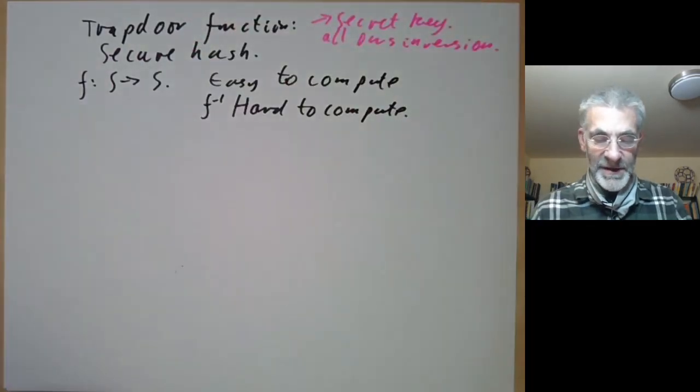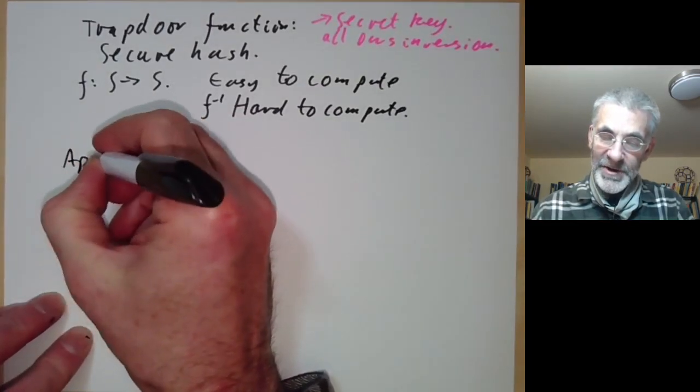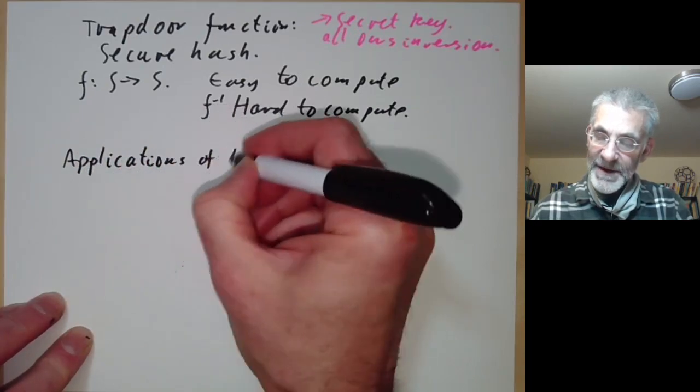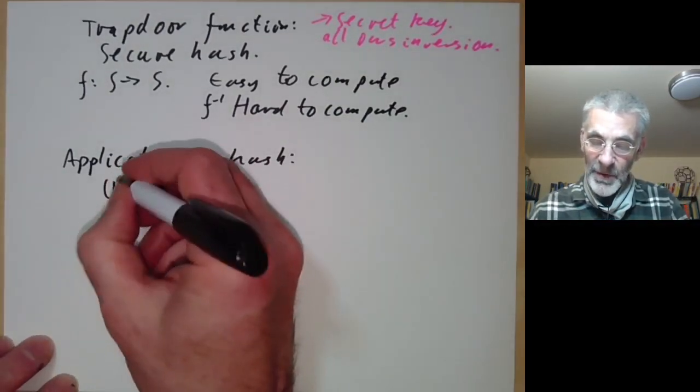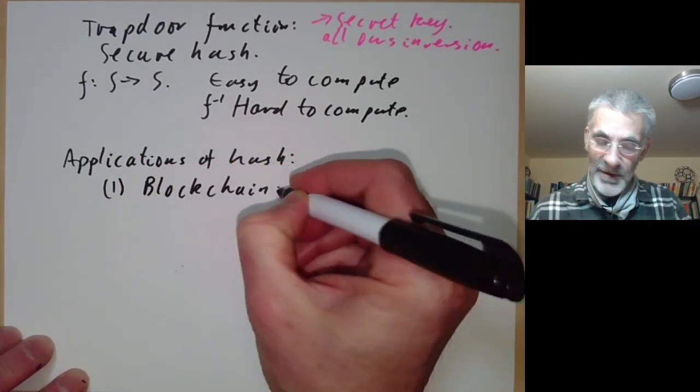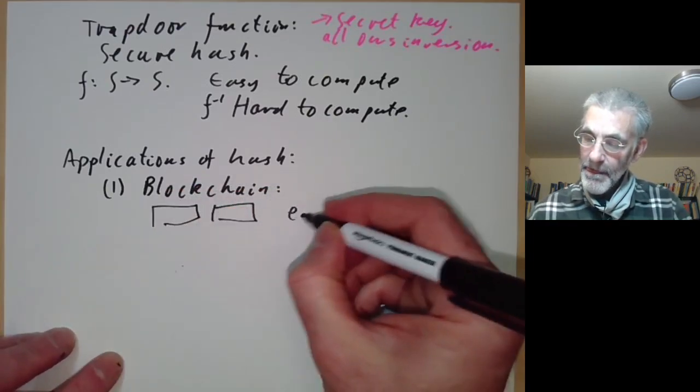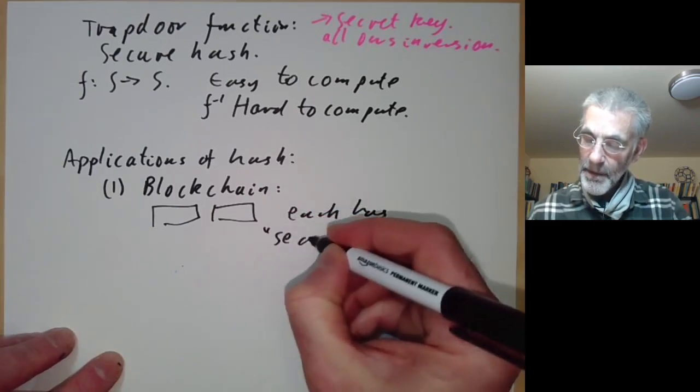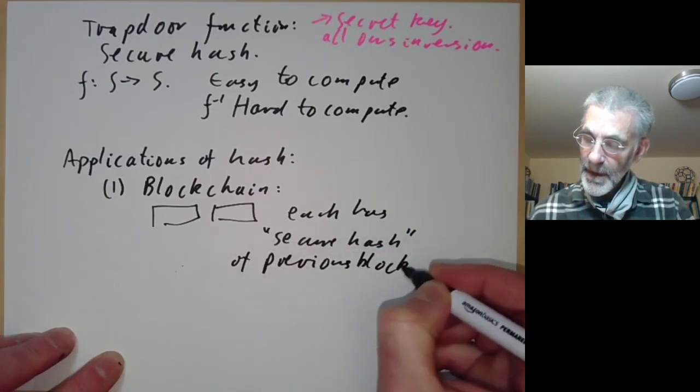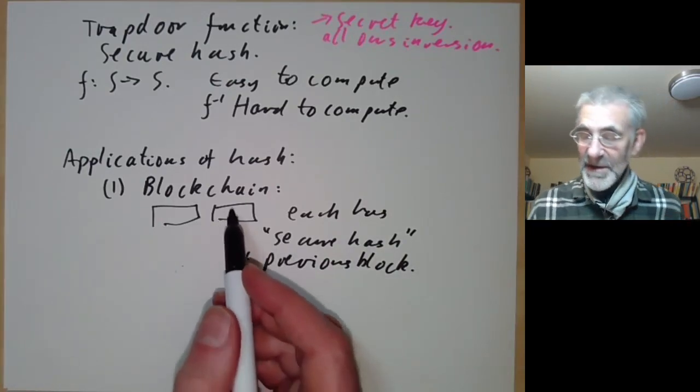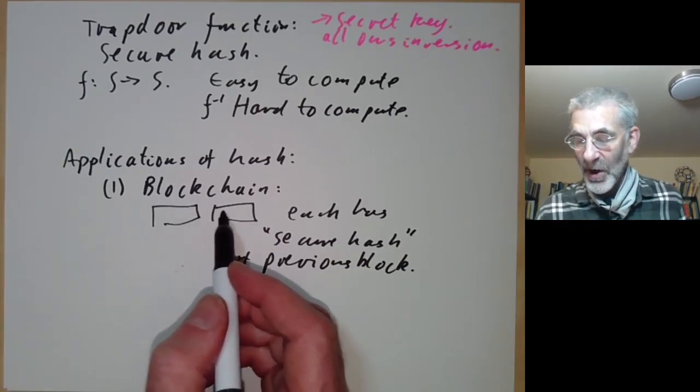There are actually several common applications of secure hash. One that's been in the news a lot recently is blockchain. A blockchain is a series of blocks, each of which contains a secure hash of the previous block. This means that if you know each block you can verify all the previous blocks by knowing the secure hash, because it's very hard to fake the secure hash.